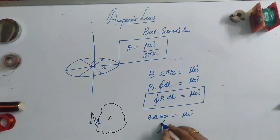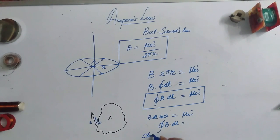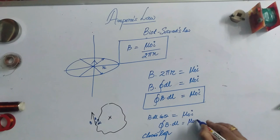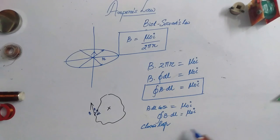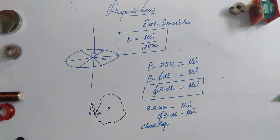This is Ampere's circuit law, or simply Ampere's law. By using this law, it is very easy to find out the magnetic field in some cases. Of course, we have to use Biot-Savart's law in other cases, but by using Ampere's law in some cases it is very easy. The key thing is you have to find out the current threaded in.